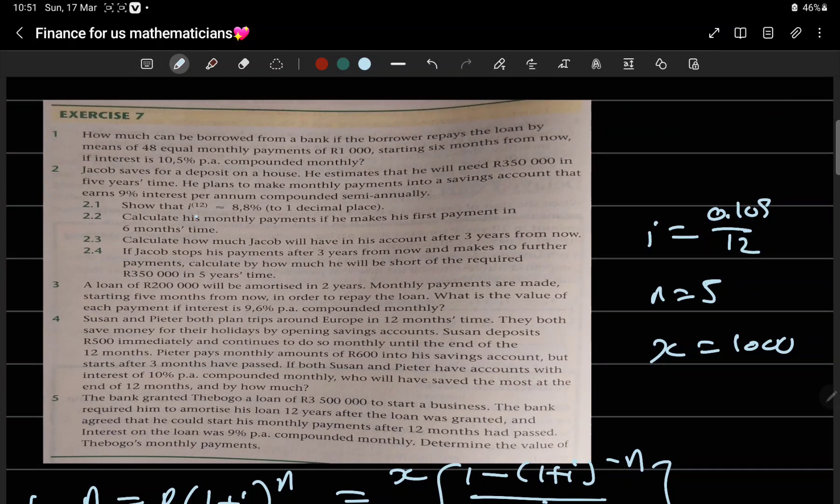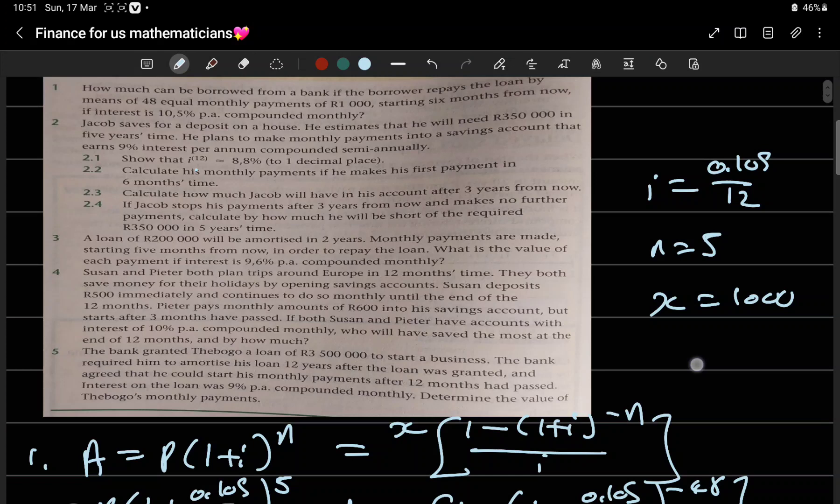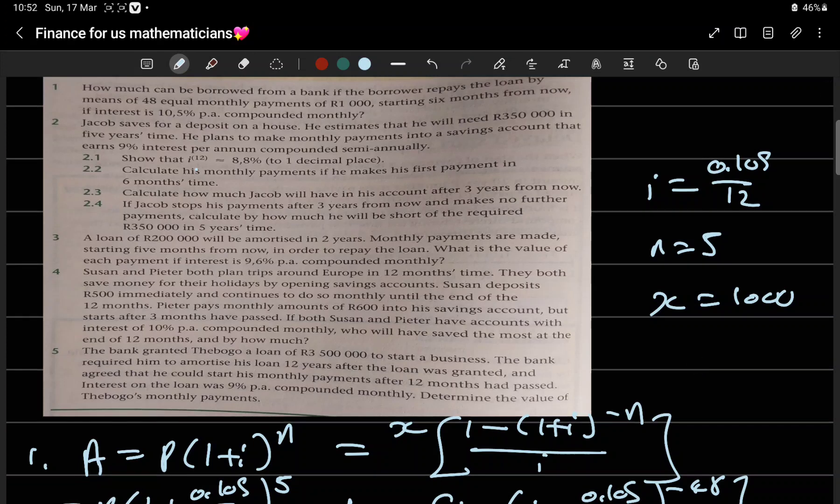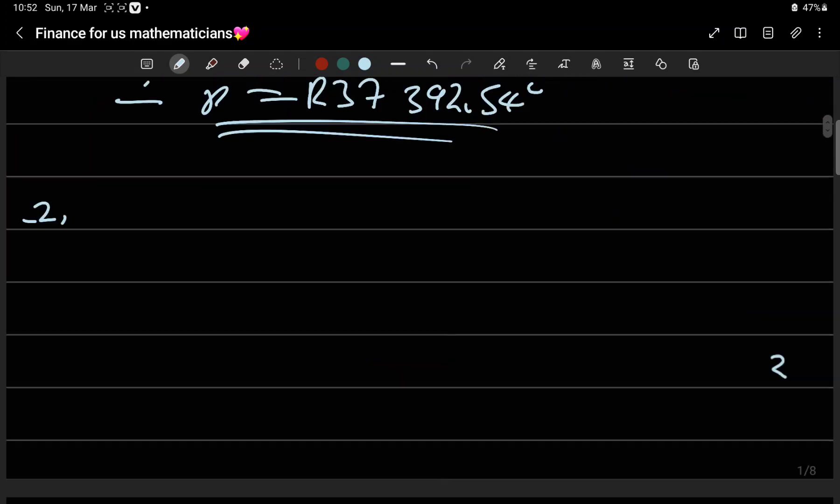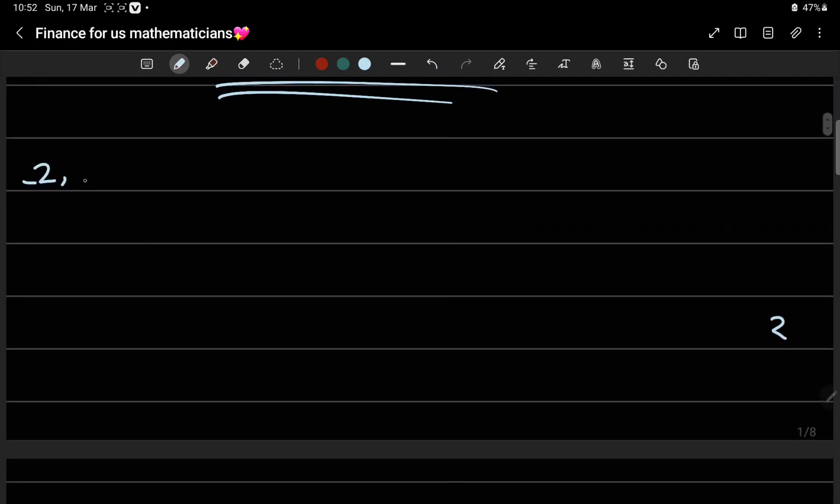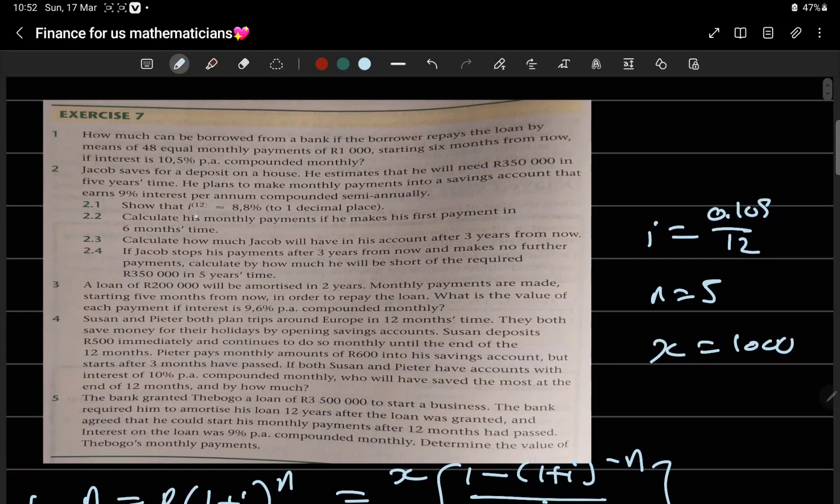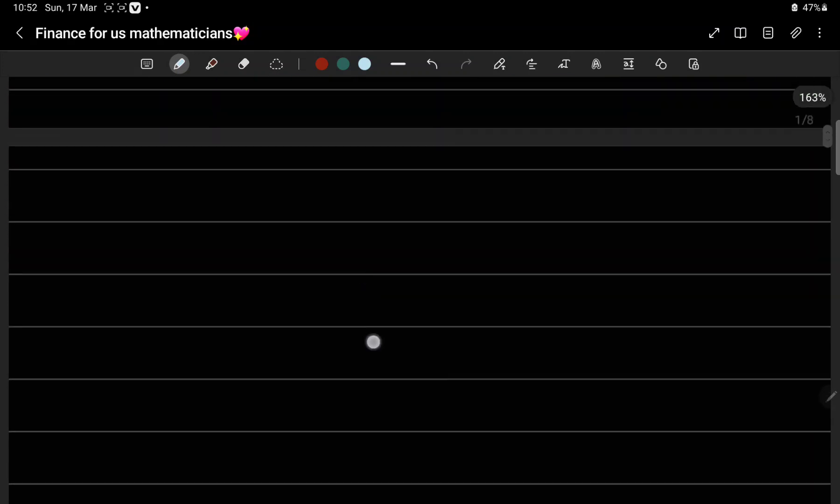Number two: Jacob saves for a deposit on a house. He estimates he will need 150,000 in five years time. He plans to make monthly payments into a savings account that earns 9 percent interest compounded semi-annually. 2.1: Show that i_12 will equal 8.8 percent. i_12 means if you compound it monthly. We're given it as compounded semi-annually. The formula is: (1 plus i/m)^m.